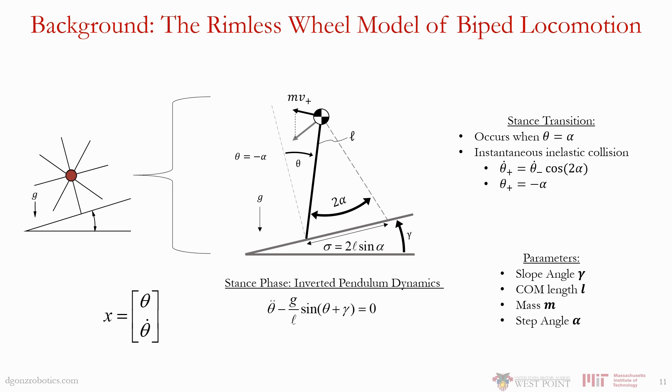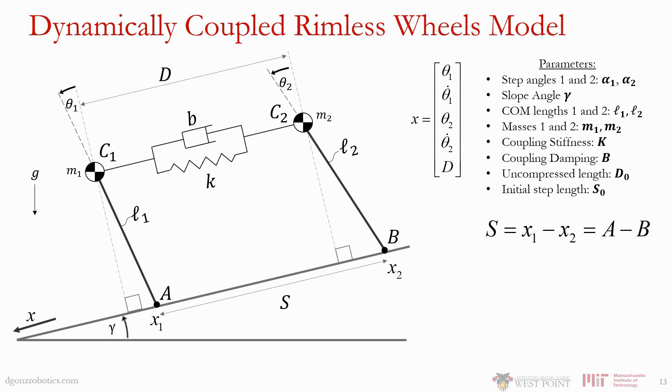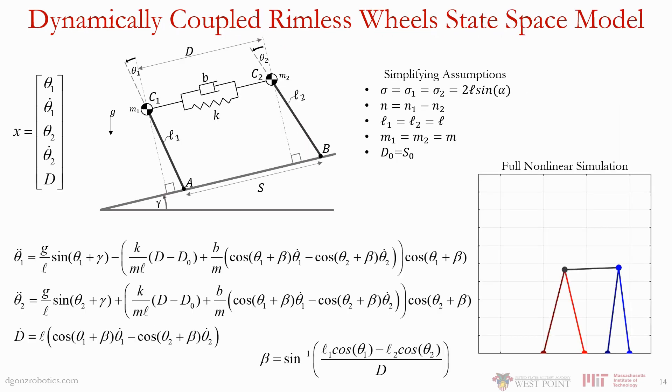What we did was take two of these rimless wheels and connect them with a spring and damper to get the dynamically coupled rimless wheels model. Each one still triggers its hybrid reset independently, but the mass centers influence each other through the dynamic coupling. Including the dynamic coupler gives us three non-linear state-determined dynamic equations of motion, which can be simulated using an ODE solver.